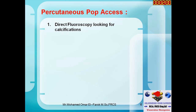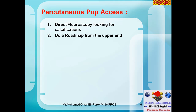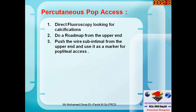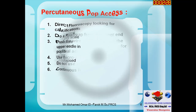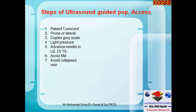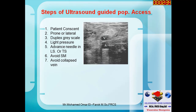For percutaneous access, look for calcification in the artery and try to direct the needle, knowing that sometimes the artery moves away from the needle. Do a roadmap from the upper end and try to guide the needle along this roadmap. Alternatively, you can push the wire into the sub-intimal plane from above and try to hit nearby with the needle, hoping to enter the lumen. Always use a micropuncture needle, don't use anything more than 6 French, and continuous heparin infusion is extremely important.